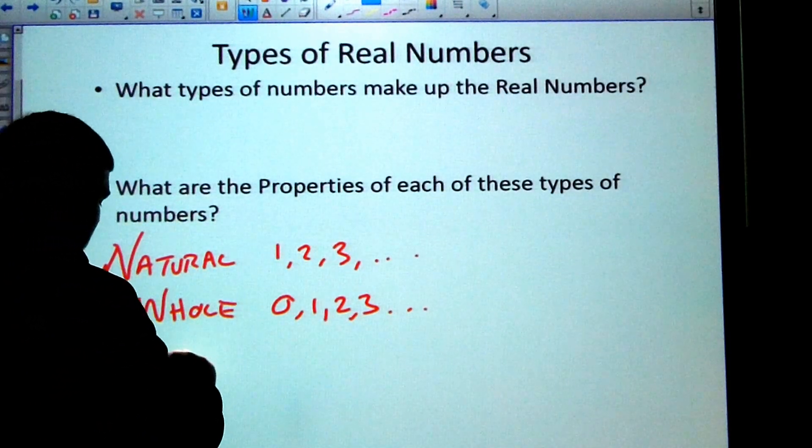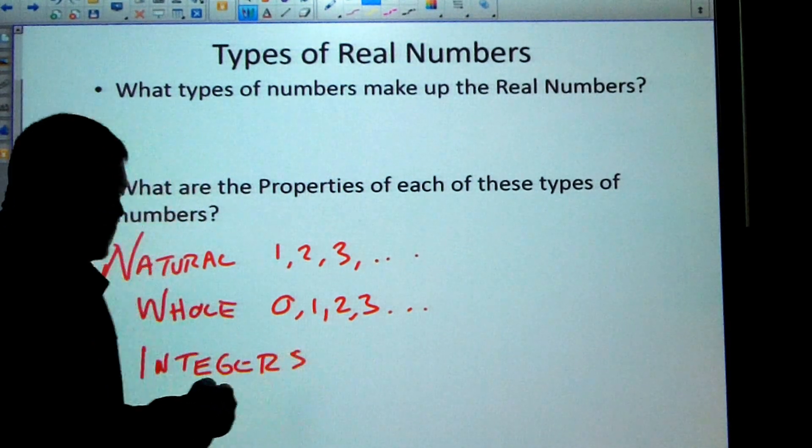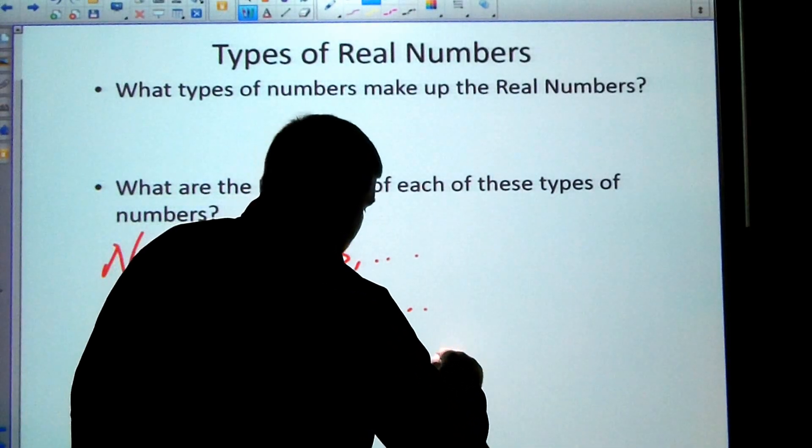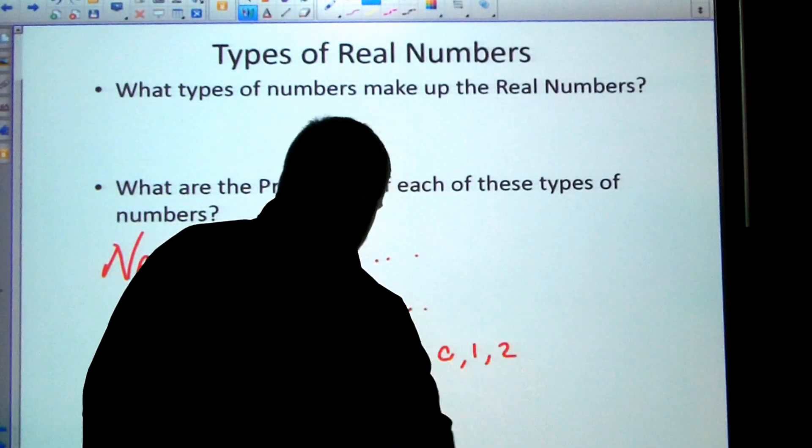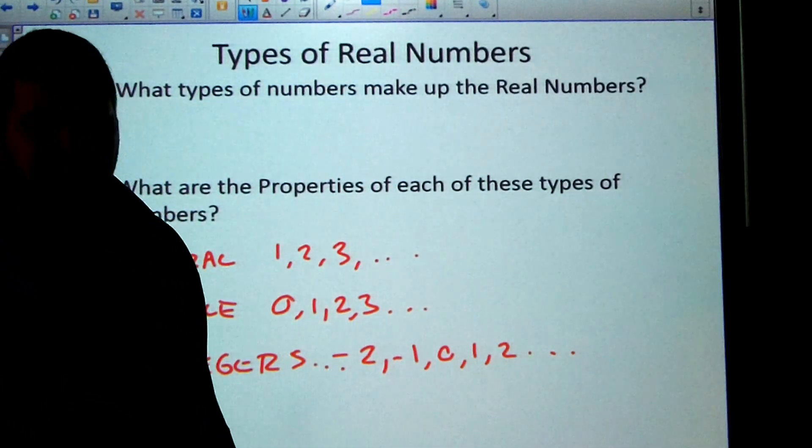So we have integers. It's all the negative numbers, so like negative two, negative one, zero, one, two. It goes on forever in both directions.